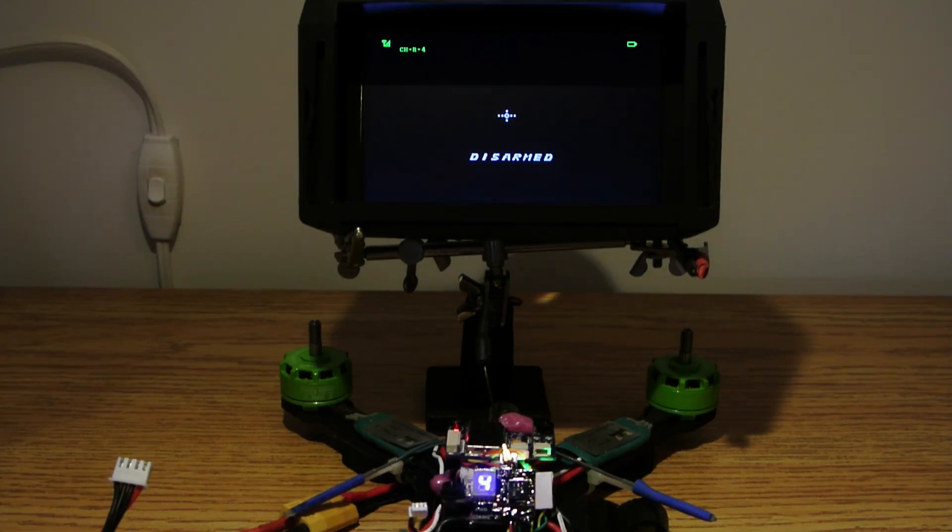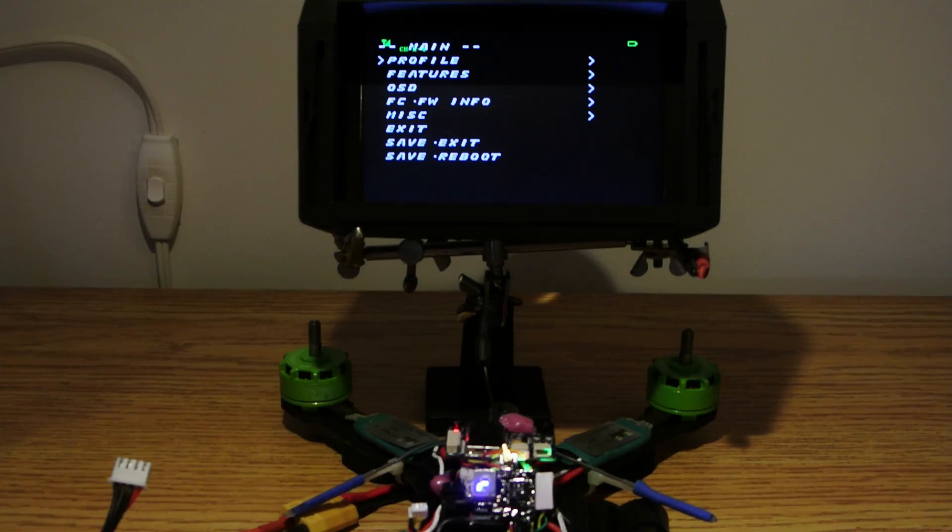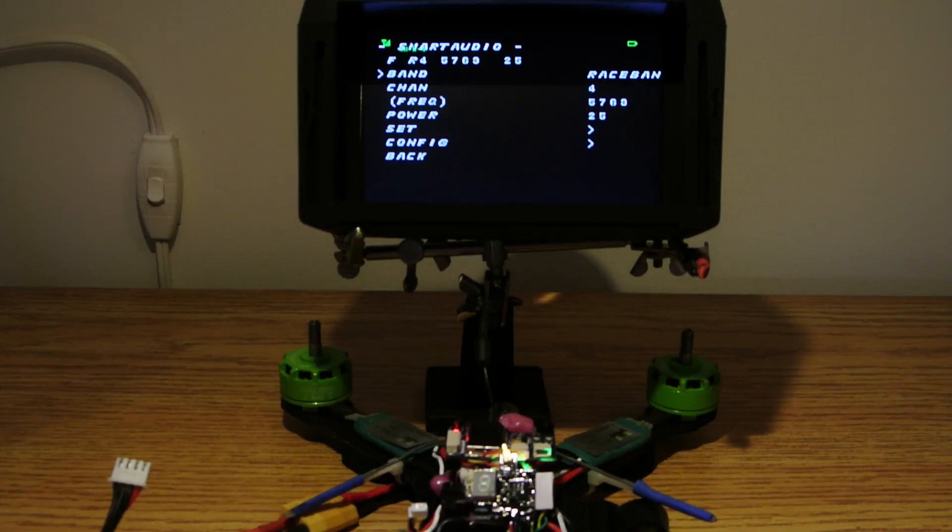To confirm it's working, enter the Betaflight menu, scroll to Features, VTX smart audio, and then from here you can change your settings. So under Power, we see 25, 200, 500, and 800.